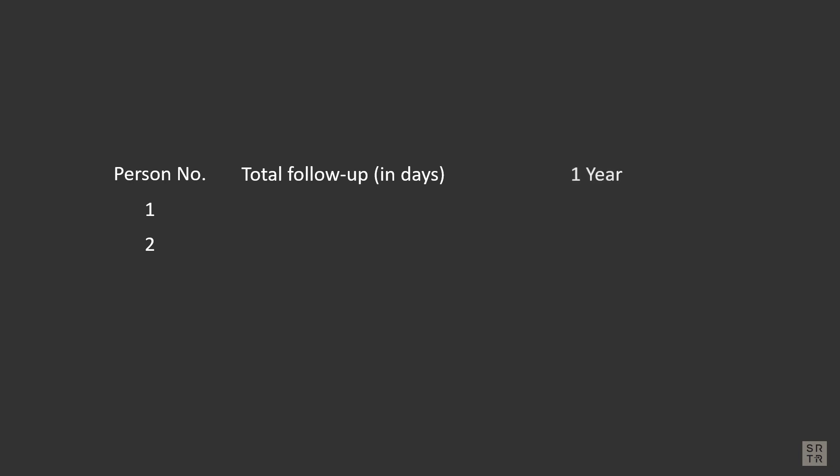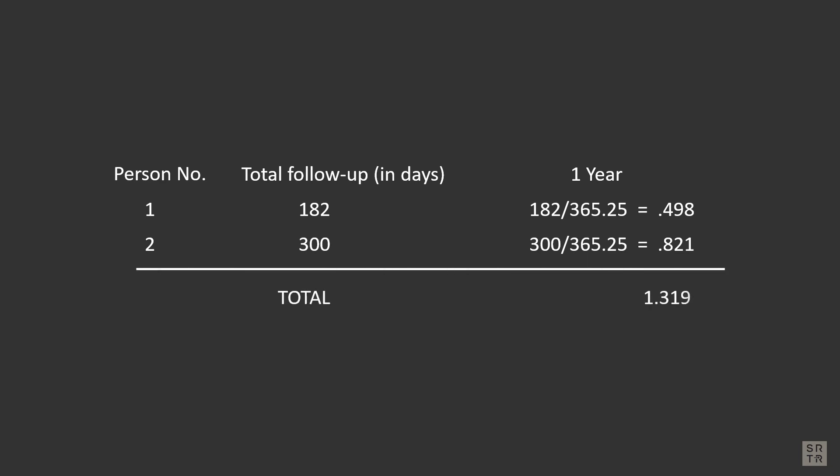For SRTR calculations, let's say there are two patients at your program. For this example, we'll count days and only look at a one-year time frame. Here we have the total days each candidate was on the list: person number one has contributed 182 days on the waitlist, and person number two has contributed 300 days. Then we divide those days on the waitlist by 365.25. The result is then added together — this equals the person years.